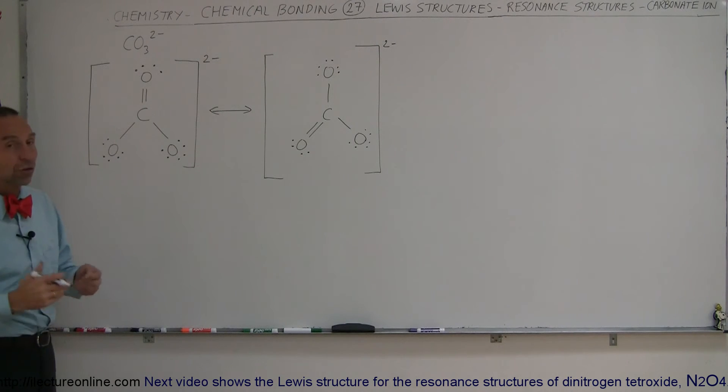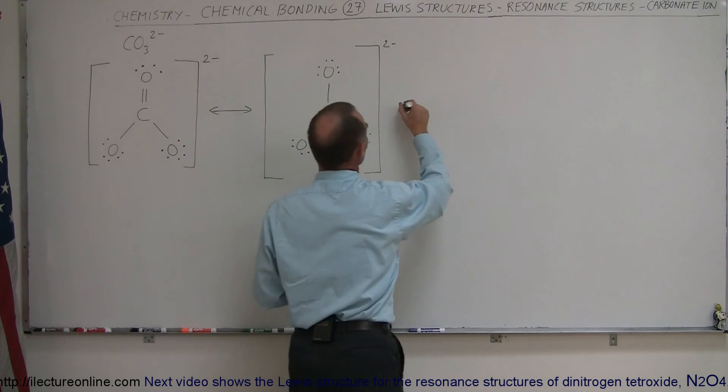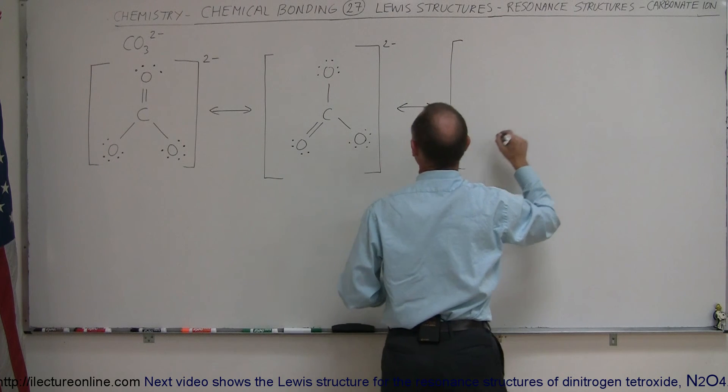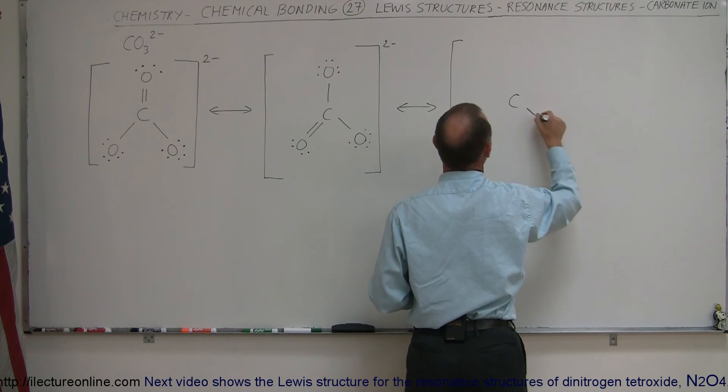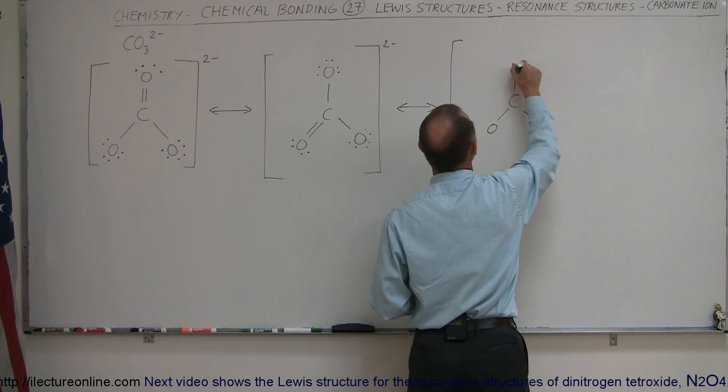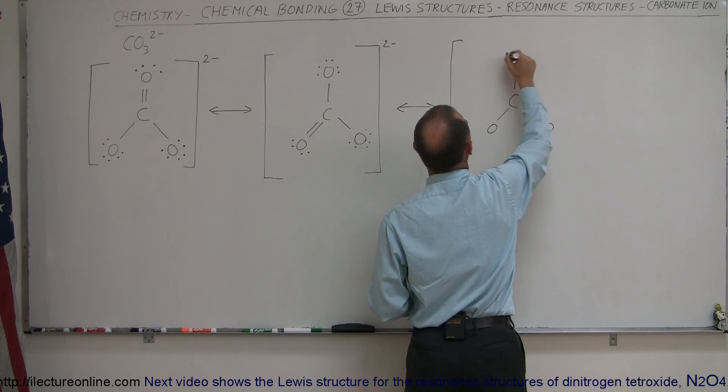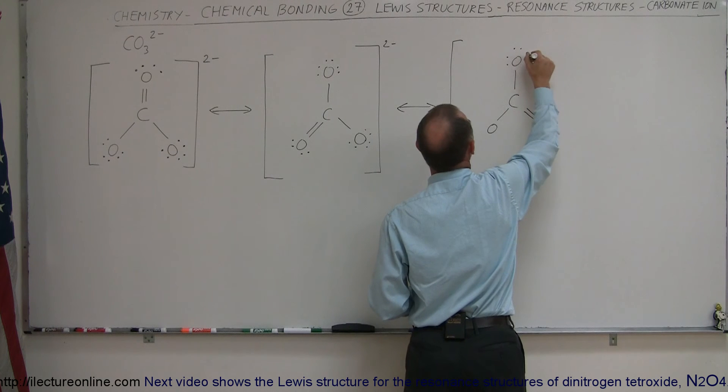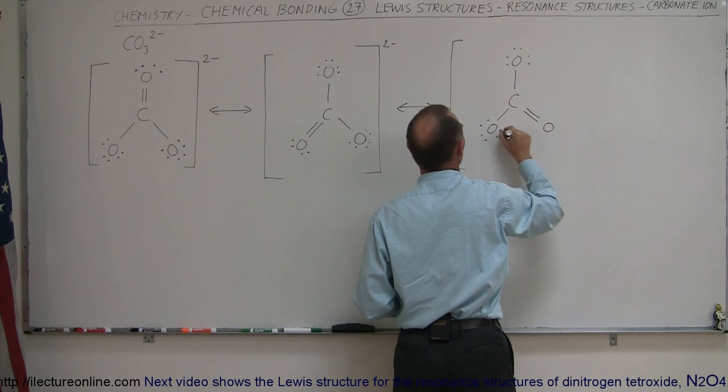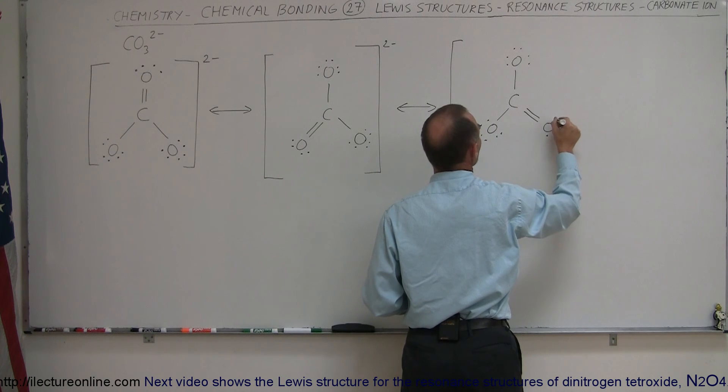And then there's a third possibility, so we have to draw the third possibility as well. Again, we'll draw something that looks like this. We have the carbon in the middle. In this case, we'll have the double bond on this oxygen rather than one of the other two. Here we'll have six valence electrons around this oxygen, six valence electrons around this oxygen and only four valence electrons here.